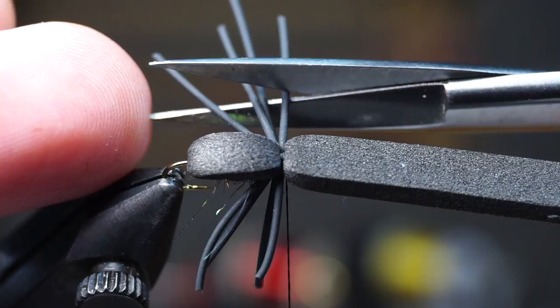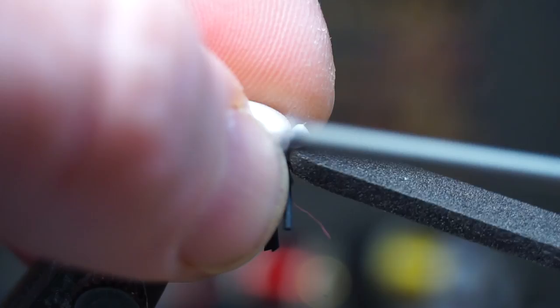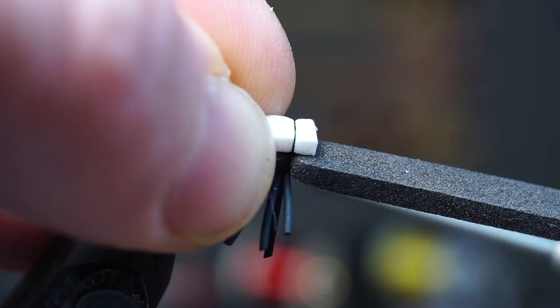Then place the white foam on top of the black foam and tie it in with a small tag sticking out forward. Then cut off the waste of the foam close to create 2 equal portions. Pull back the foam rearward and make a few wraps underneath it.